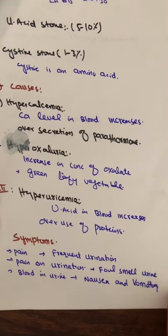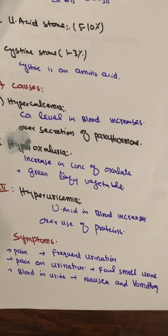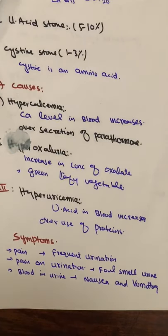Another type of kidney stone is cysteine. Cysteine is an amino acid, and cysteine stones make up one to three percent of all stones — they are called cysteine stones. This amino acid forms collagen in our body and contributes to bone formation. Cysteine stones, comprising one to three percent, are considered minor.